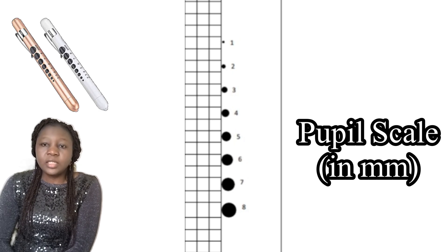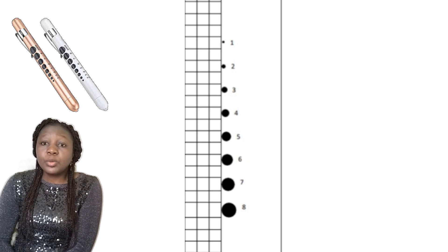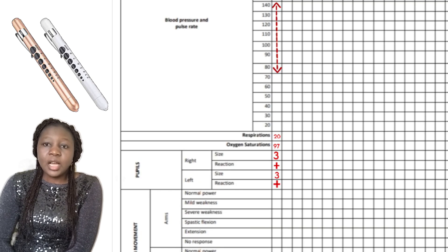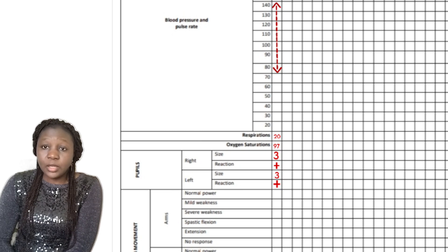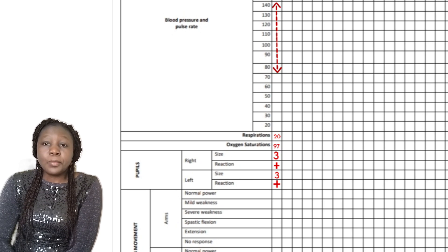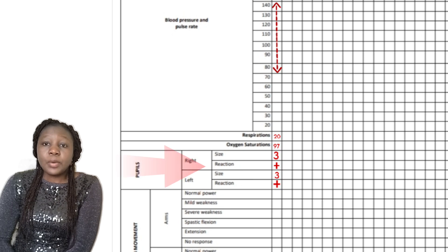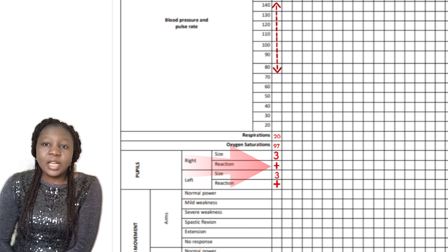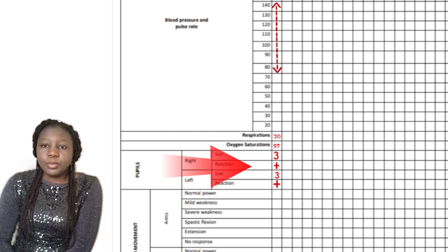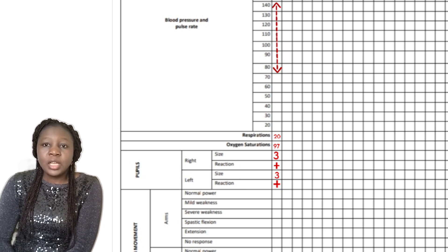When you shine the light into your patient's eye, shine it from the outer corners to the inner corners. You can do the right eye first and then the left eye. Whatever the pupil size is, you write it in the box. For instance, if you start with the right eye and the size is 3, write three in the box in front of size. If the pupils react to light, put a positive sign in the box in front of reaction. Do the same for the left eye — if the size is still 3, put three in the size box and a positive sign in the reaction box.